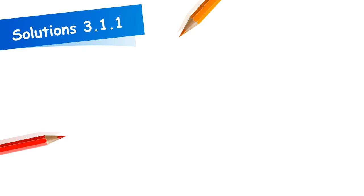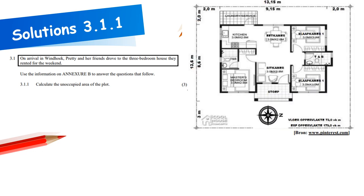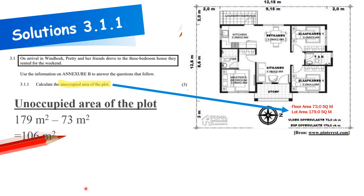Worksheet question: using Annexure B, calculate the unoccupied area of the plot. The house has a floor area of 73 m² and the lot/plot area is 179.0 m². Unoccupied means the area the house does not stand on. Therefore: 179.0 − 73 = 106 m² is the unoccupied area of the plot.